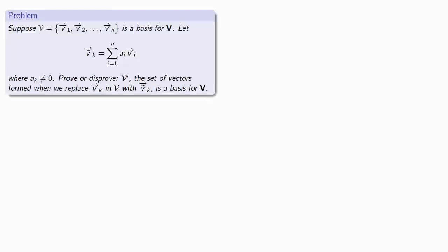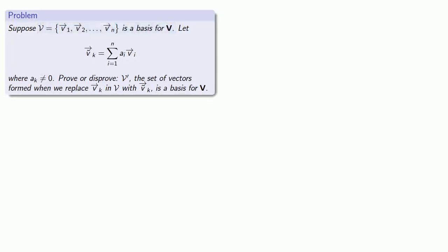Suppose I have a basis for our vector space v. Let v tilde k be some linear combination of the basis vectors where ak is not equal to 0. We want to prove, or potentially disprove, that v prime — the set of vectors formed when we replace vk with v tilde k — is still a basis for our vector space v.